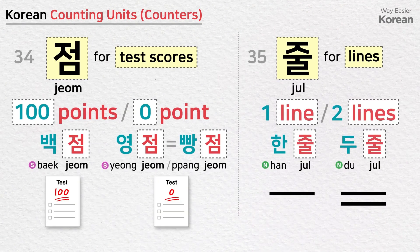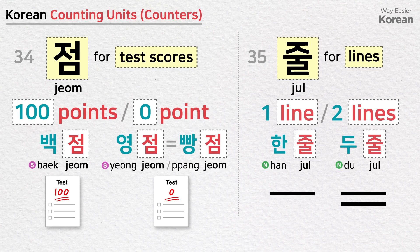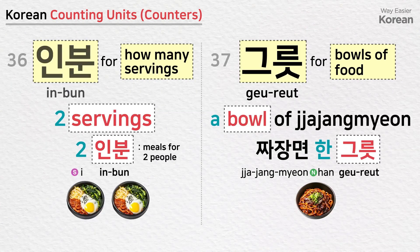점 is a counting unit for test scores: 100 points — 백점; zero points — 영점 or 빵점. 줄 is a counting unit for lines: one line — 한 줄; two lines — 두 줄. 인분 is a counting unit for how many servings: two servings — 이인분 (meals for two people).